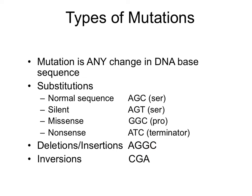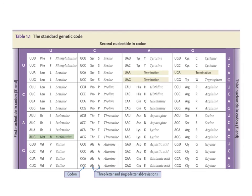You can also have insertions, where you add another base into the sequence, or deletions where you remove one. You can have inversions, for example AGC and CGA is an inversion of the AGC sequence. The standard genetic code has degeneracy, with 64 codons encoding 20 amino acids and three stop signals. These types of mutations can lead to silent, missense, nonsense, deletion, and inversion outcomes.